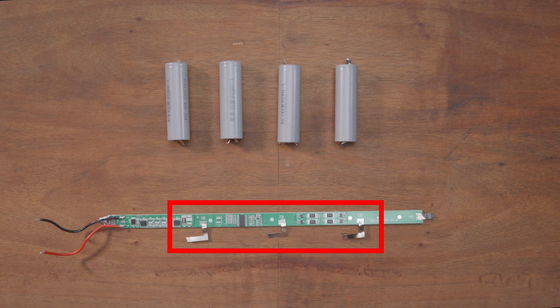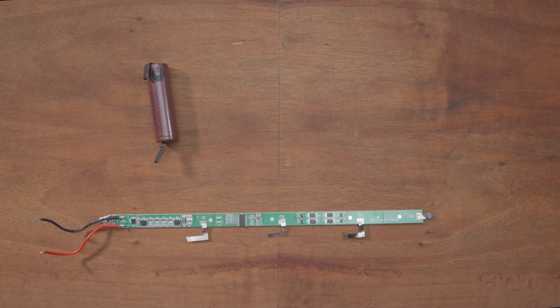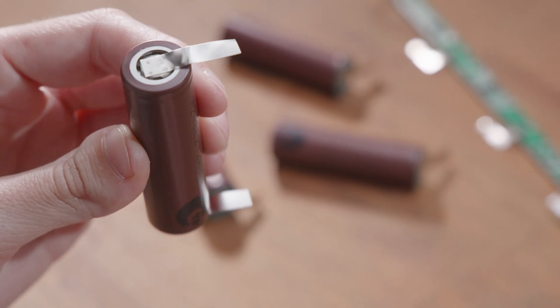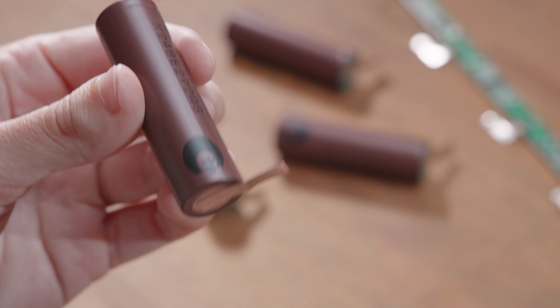Keep as much of this contact surface as possible for future soldering. Here are random new batteries from AliExpress. These particular batteries have factory soldered nickel strips, which is helpful.